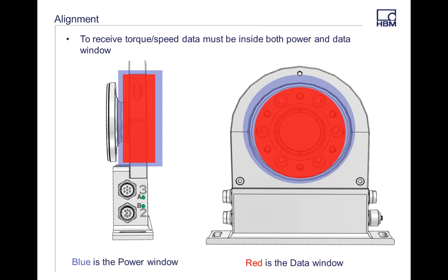Inside of this window is the next little smallest window. That's going to be your data window. Basically, as long as your antenna is in both of these windows, you're going to be getting your data and your power, and all the other information that you're getting from your rotor. For example, like rotor temperature, your speed, and things like that.